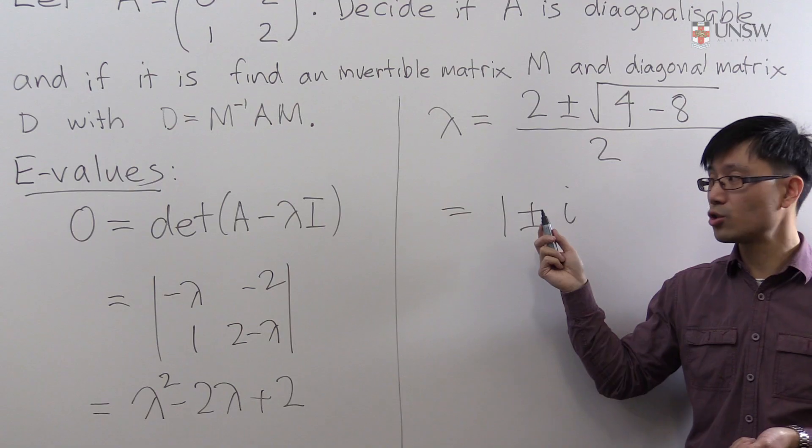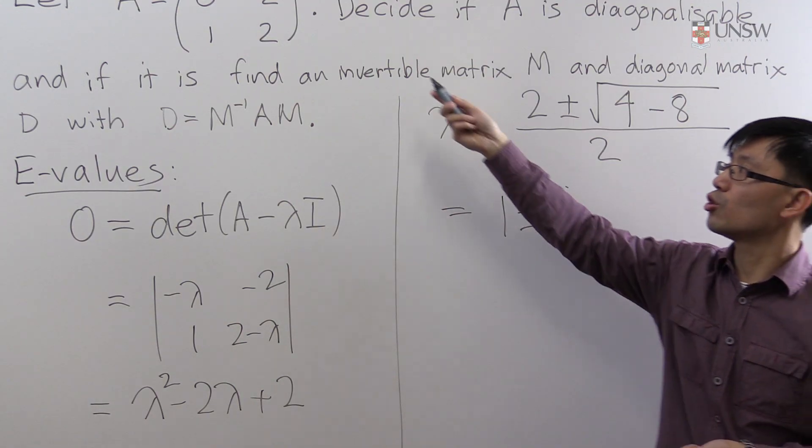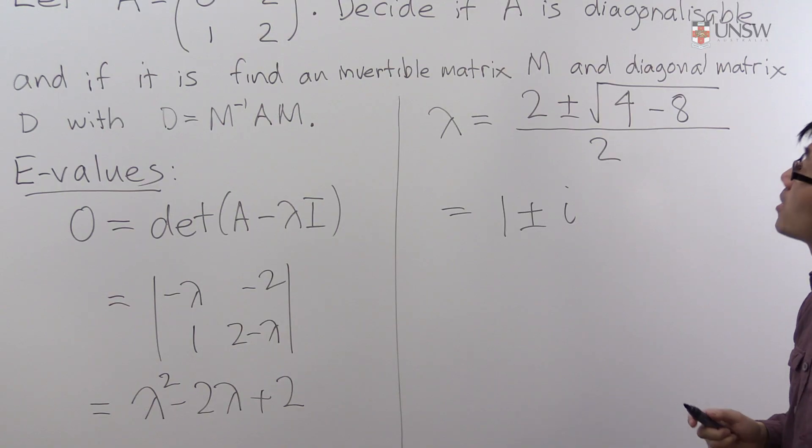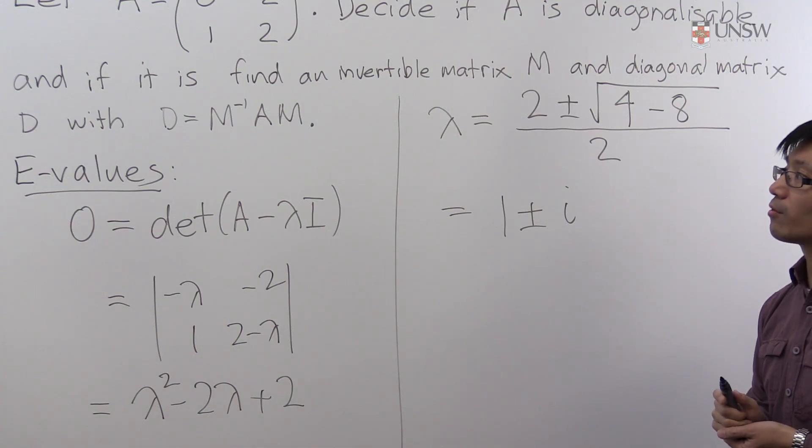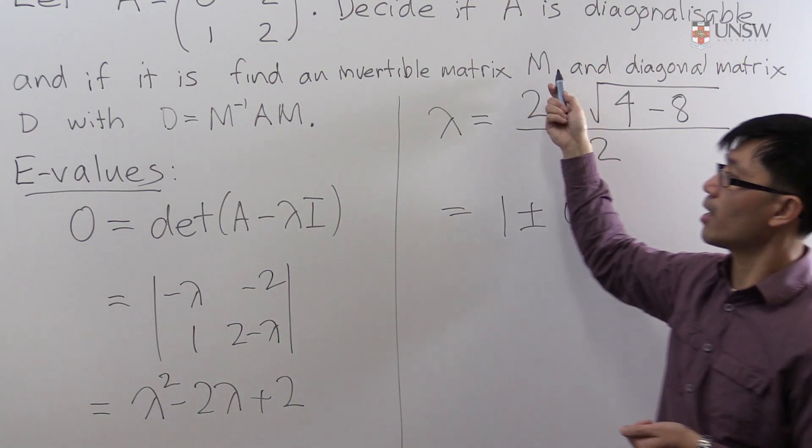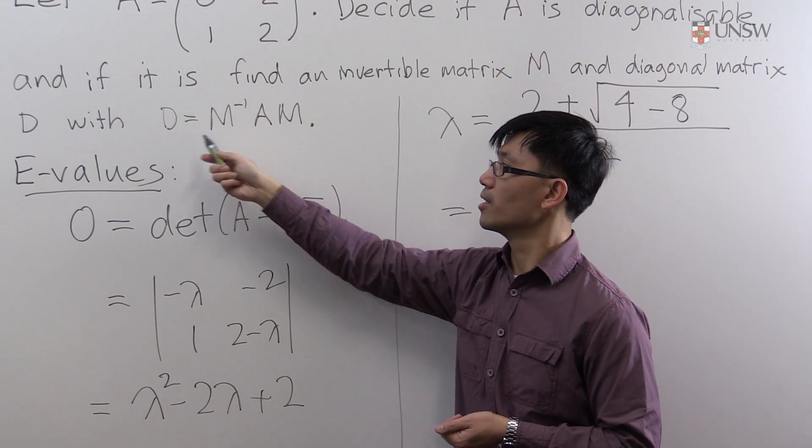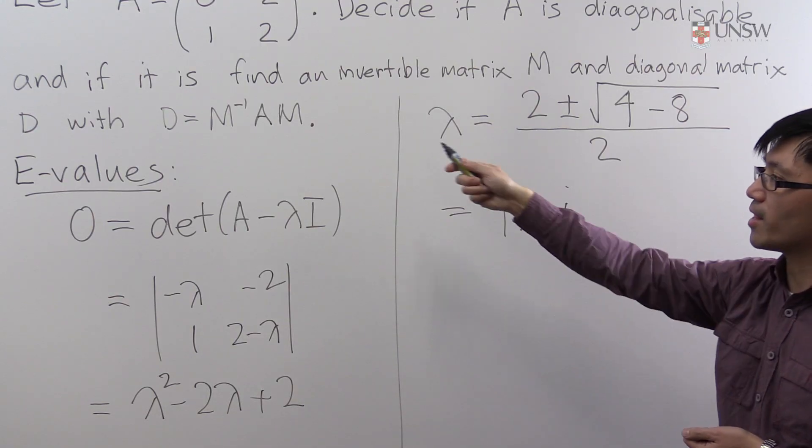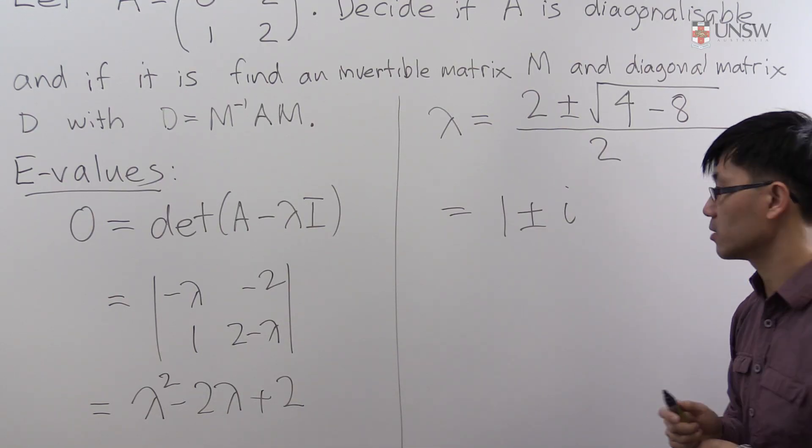This is a 2 by 2 matrix and you have two distinct eigenvalues. So in this case we can actually tell straight away that this matrix is diagonalizable. And so the next part of the question is to actually find the M and the D. The D actually will just involve these two eigenvalues. So to find the M we just need to find the eigenvectors.